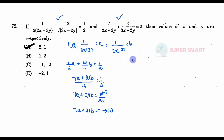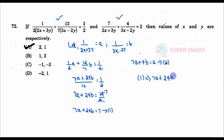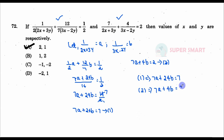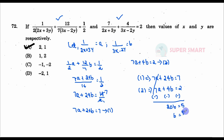Now let's look at equation number 2. From equation 2, we get 7a plus 4b is equal to 2. Subtracting the equations: 24 minus 4 is 20b, equal to 7 minus 2, which is 5. So b equals 5 by 20.